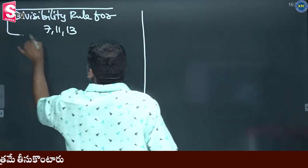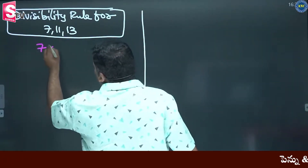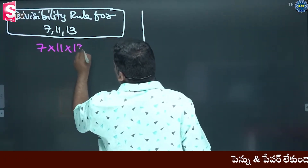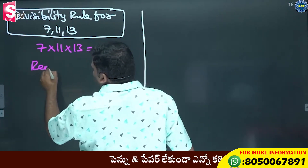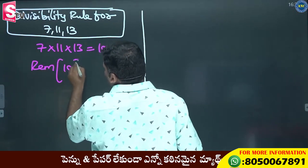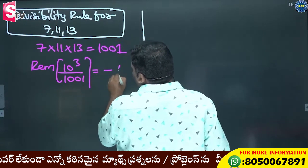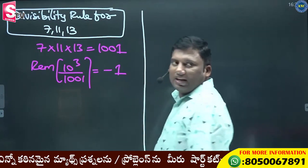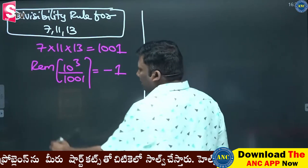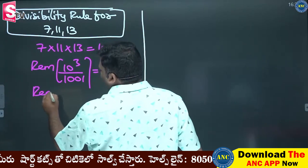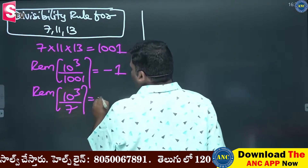Divisibility rule for 7, 11, and 13: 7 × 11 × 13 = 1001. 1001 is close to 1000. So when 10 cube is divided by 1001, the result is minus 1. Automatically the logic is clear: 10 cube divided by 7 is minus 1. 3 cube is 27, 7 fours are 28, so remainder is minus 1.